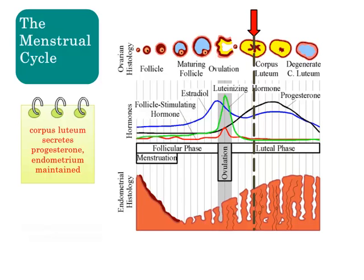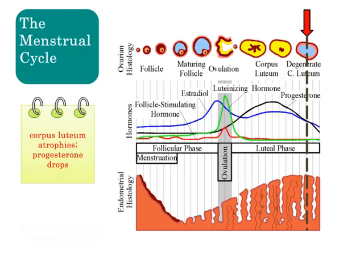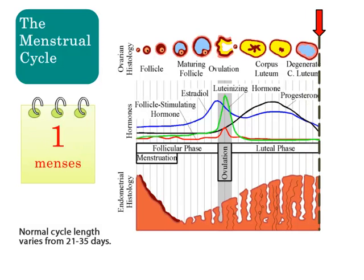Increasing levels of progesterone suppress FSH and LH production. FSH and LH levels fall, and if pregnancy has not occurred, the corpus luteum atrophies. Without the corpus luteum, progesterone levels drop and stop maintaining the uterine lining, so menstruation happens and the next cycle begins. The length of the cycle and of each phase varies from woman to woman and even cycle to cycle — although the average menstrual cycle is 28 days, only about 10% of all cycles are actually 28 days in length.